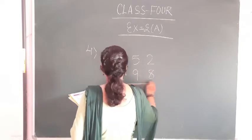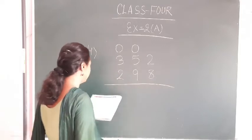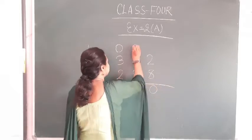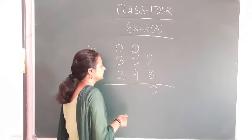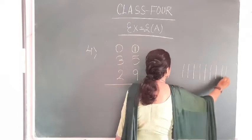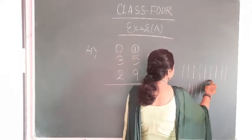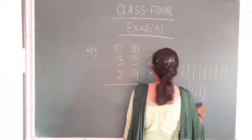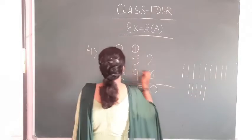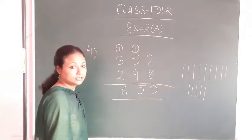10 plus 8, this is 10 — carry 1. 9 plus 5: counting 1 through 14, plus carry 1, this is 15. Carry 1, then 3 plus 5 plus 1 is 9. So then this is 6, 50.